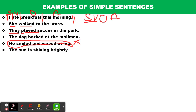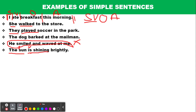'The sun is smiling brightly.' This is a simple sentence. 'The sun' is the subject, 'is smiling' is the verb phrase, and 'brightly' is the complement. We classify this as an SVC structure — subject, verb, complement. 'The sun is smiling brightly' — that is a simple sentence.